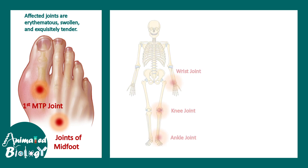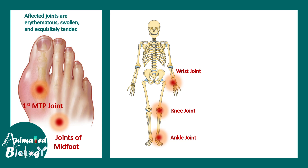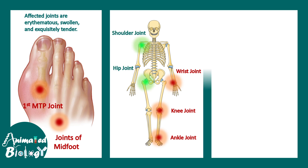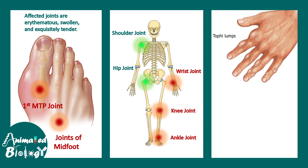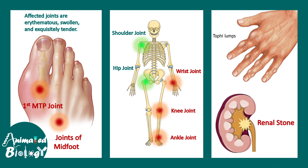Commonly involved joints include the first metatarsophalangeal joint, midfoot joints, ankle joints, and knee joints; wrist joints can also be involved. However, the hip joint and shoulder joint are rarely involved. Long-term gout can lead to deposition of uric crystals in soft tissue forming tophi, and uric crystals in the kidney can give rise to renal stones or uric nephropathy.